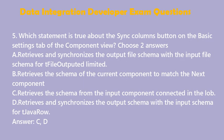Question 5: Which statement is true about the Sync Columns button on the Basic Settings tab of the Component view? Choose two answers. A. Retrieves and synchronizes the output file schema with the input file schema for tFileOutputDelimited. B. Retrieves the schema of the current component to match the next component. C. Retrieves the schema from the input component connected in the job. D. Retrieves and synchronizes the output schema with the input schema for tJavaRow. Answer: C, D.